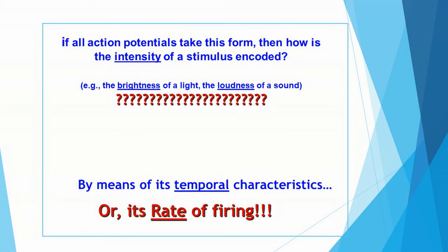You've now seen a diagram of the action potential, or the neural signal occurring along the length of the axon of a neuron, and that is what all action potentials look like. I could be measuring the voltage changes for a neuron in your leg, in your intestines — it doesn't really matter, they all look like this. If all action potentials take this form, then how is it that your nervous system encodes information about the intensity of a stimulus? How bright is a light? How loud is a sound? How hard is a touch?